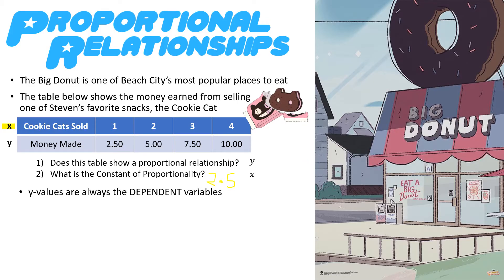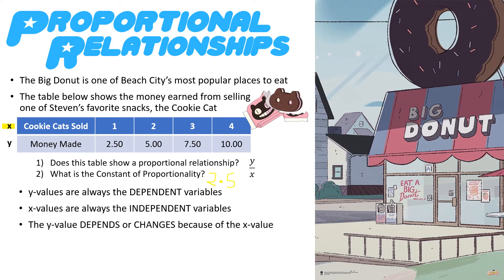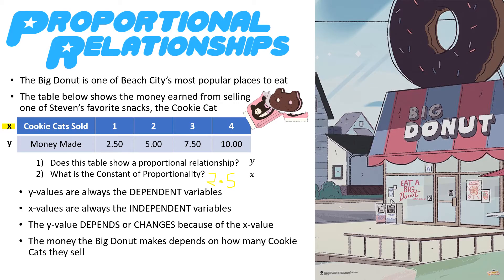The Y values are always the dependent variables. That may sound familiar from science class, but in math you need to understand that the Y values are always the dependent variables and the X values are always your independent variables, no matter what. The reason is that the Y value depends on or changes because of the X value. With this situation, the money the Big Donut makes depends on how many cookie cats they sell — so if you sell four cookie cats, you would make $10.